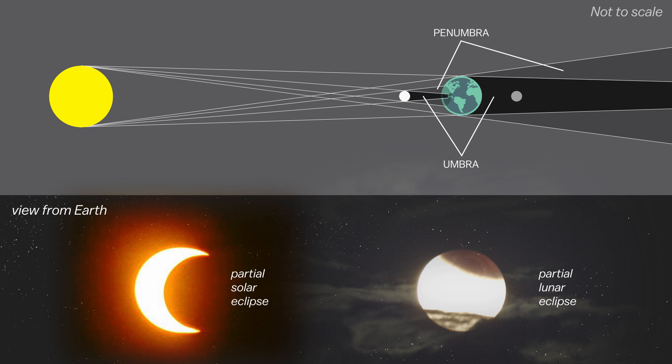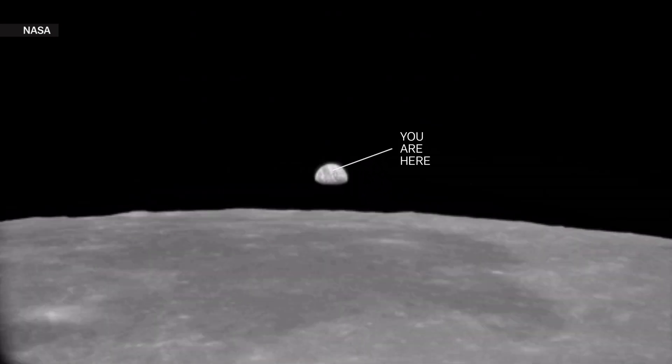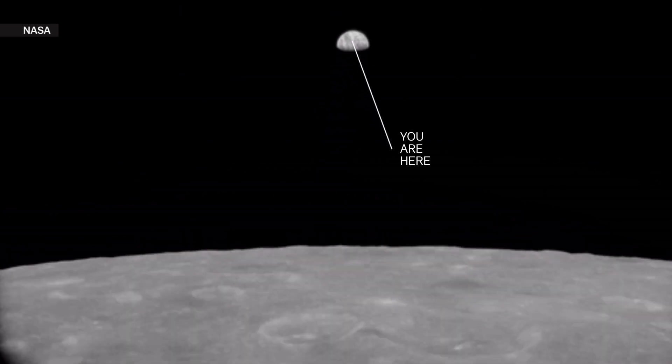So that's the short explanation. But you might wonder why we don't get eclipses every month given that the moon orbits Earth every 29 days or so.